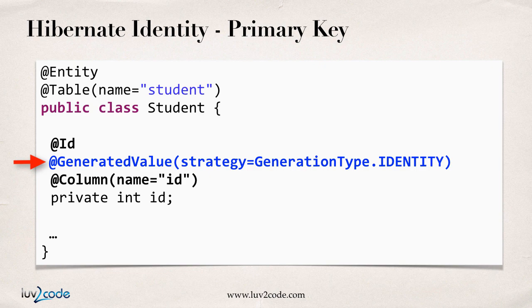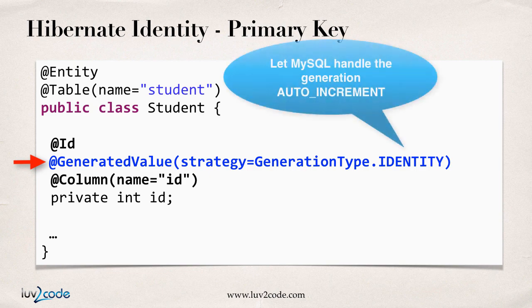We say strategy equals GenerationType.IDENTITY. We're basically saying that the actual primary key column for this given table is the column we'll use for the generation strategy. So in our case of MySQL, we have our ID column set to auto-increment and we leave it up to MySQL to handle the auto-increment for us.